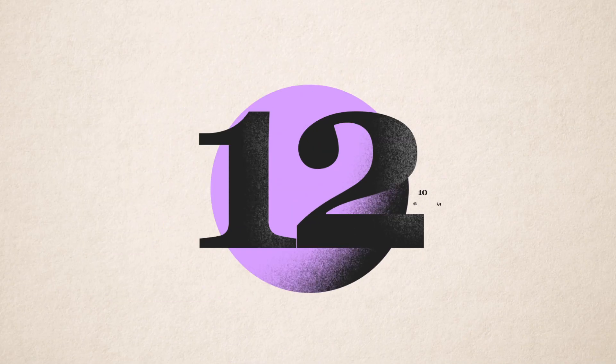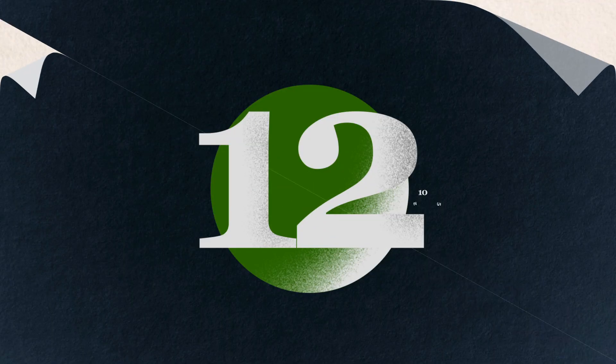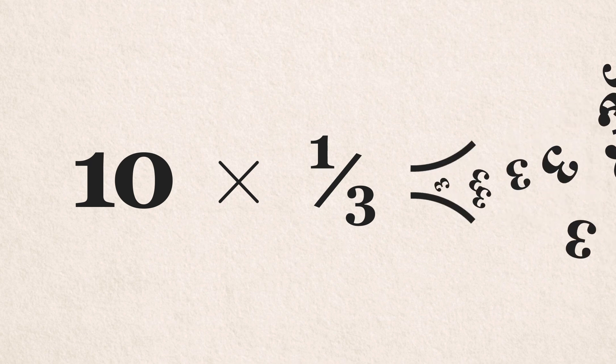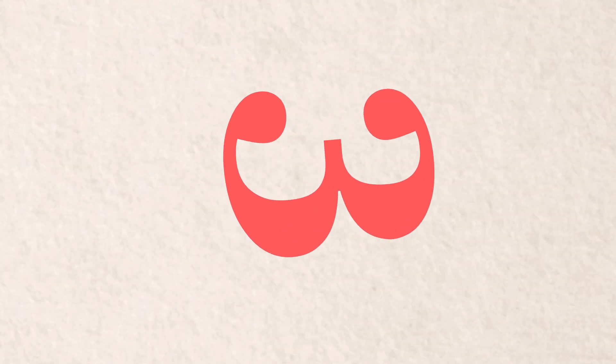With 12, you can divide things in more ways without having to chop them off. Have you tried to take a third from 10? It's just an infinite nightmare of 3s. Whereas with 12, it's just 4.